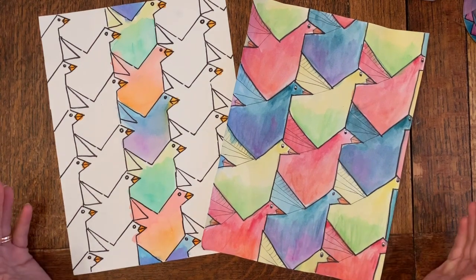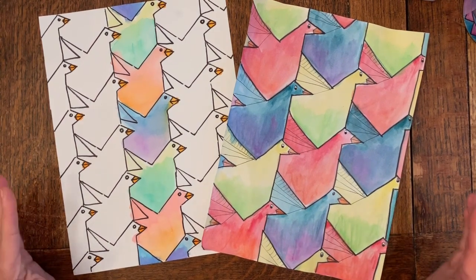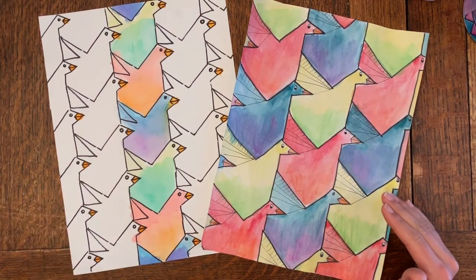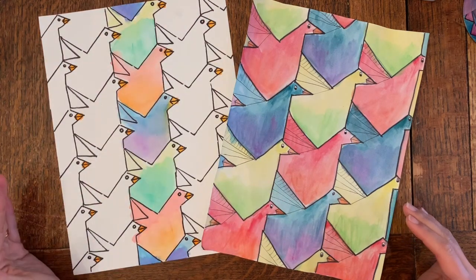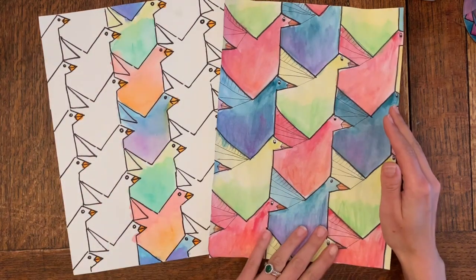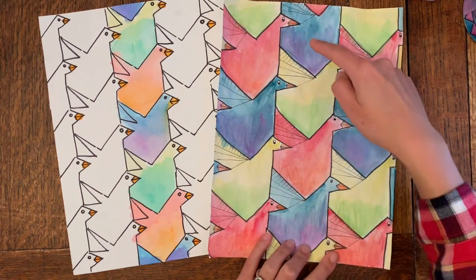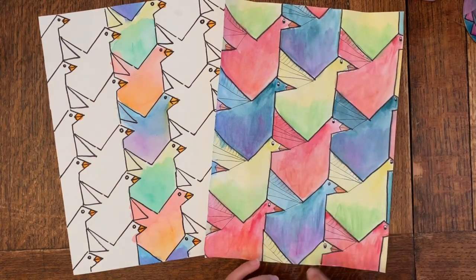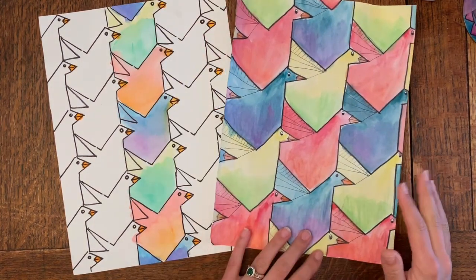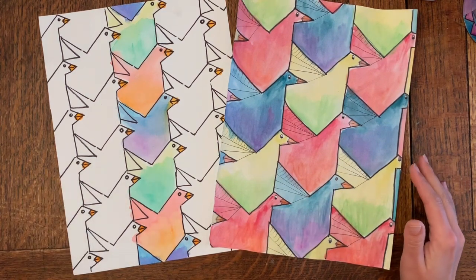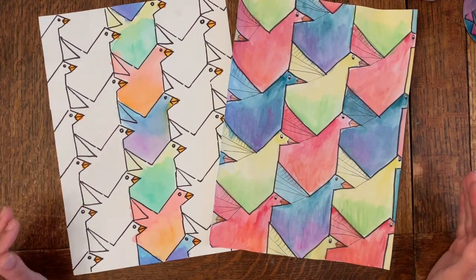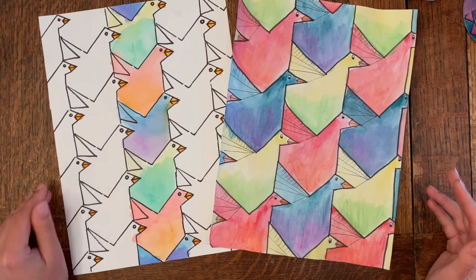There you have it - that's how you create a tessellating bird. On yours I want you to finish coloring to create a pattern, just like I did here where I did blue, yellow, red, blue, yellow. Can't wait to see your bird and can't wait to see if you create your very own tessellation.